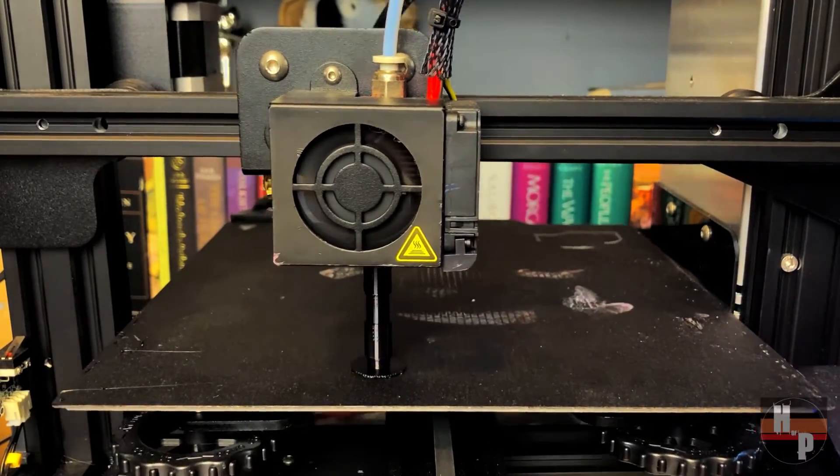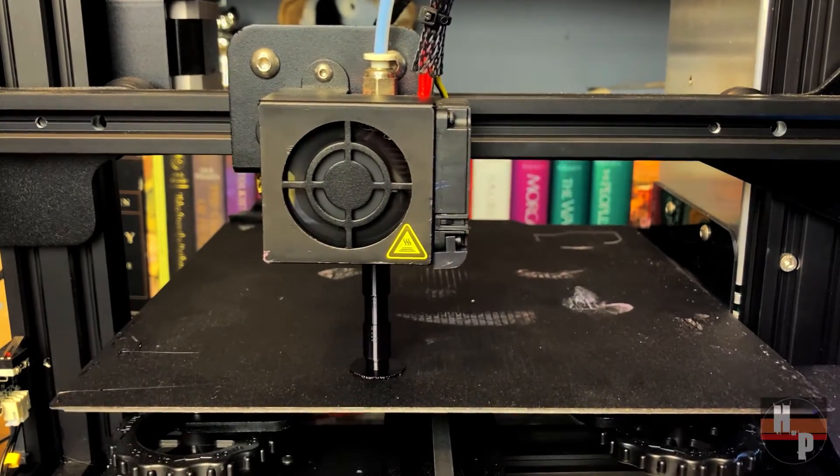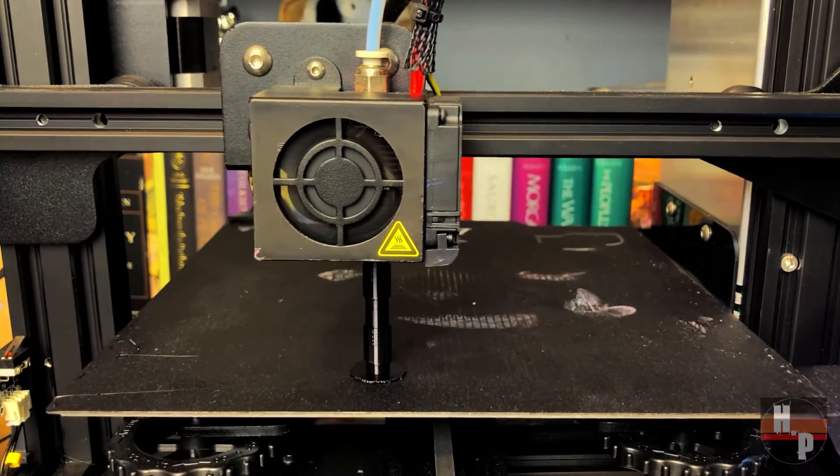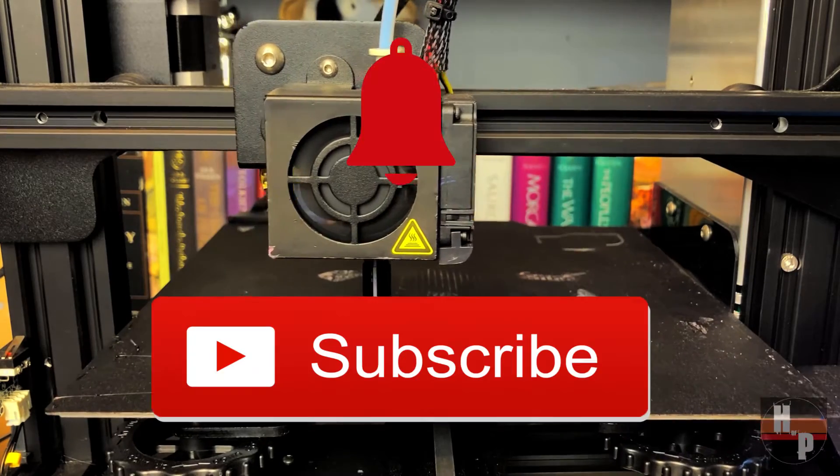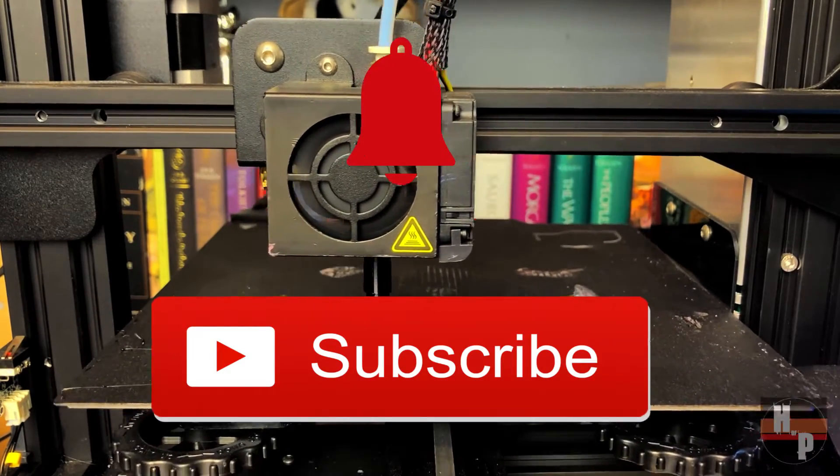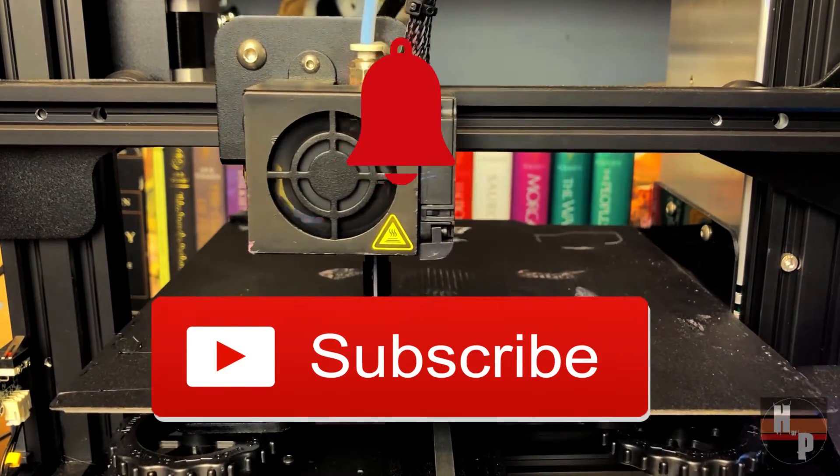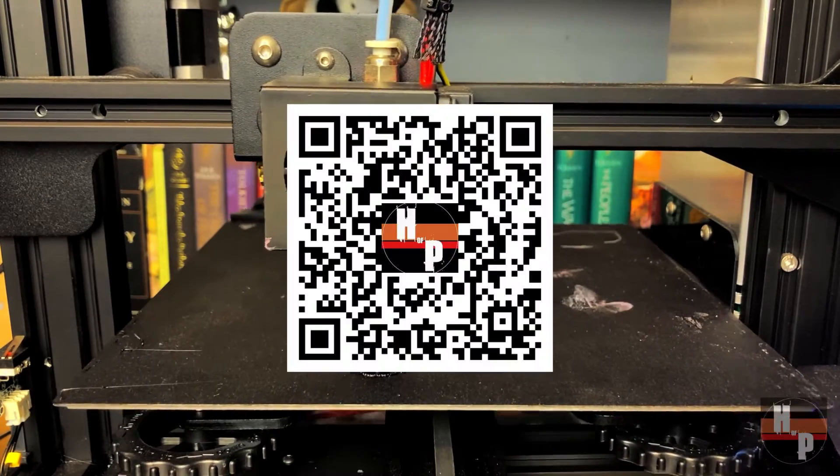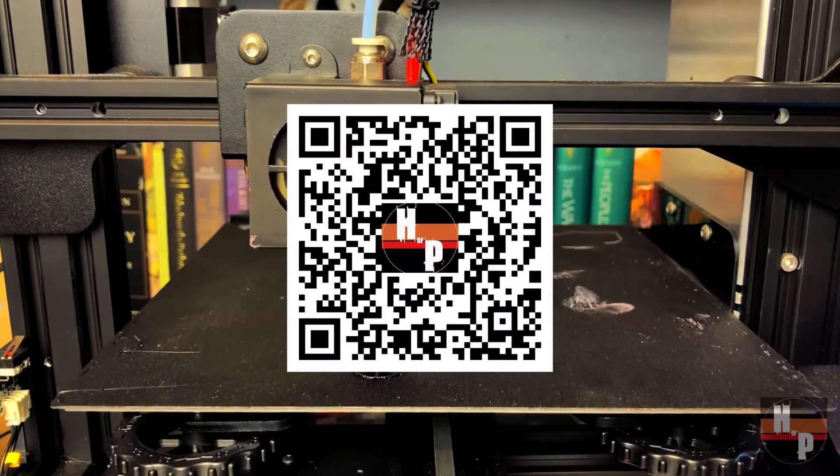These were then printed on an Ender 3 Pro. A link to the free files and print settings can be found below. While this one's printing, hit those subscribe and notification buttons so you can be notified when we drop new videos. Or you can scan this code to see our other videos.